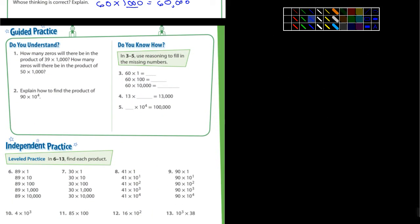Looking at the guided practice here. Number one, it says how many zeros will there be in the product? Now, product is the answer to a multiplication problem. And the product of 39 times 1,000. So I'm just going to write that down right here. 39 times 1,000 equals. Ms. Maldonado, what's 39 times 1,000? 39,000. So the answer to that first question, how many zeros will there be, it's going to be three zeros.